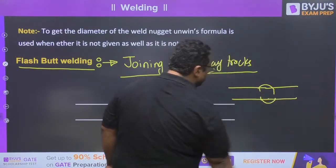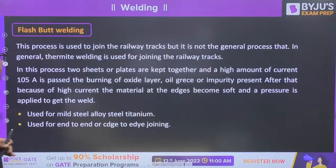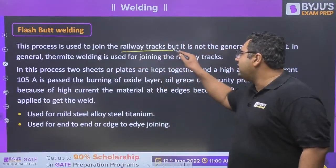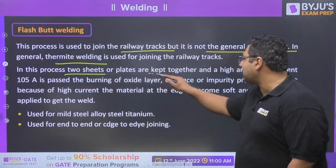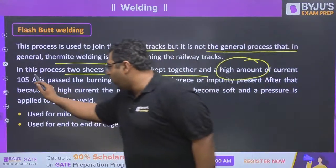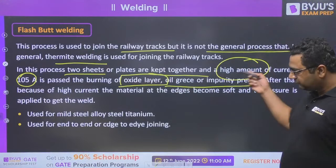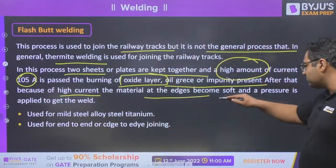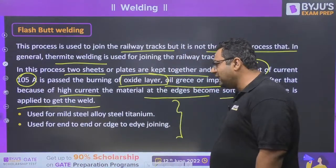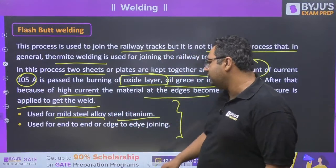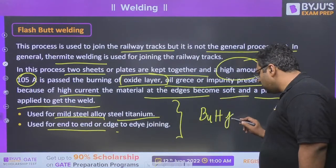As the rail edges become softer, pressure is continuously applied and they get joined, producing a butt weld. Important points for flash butt welding: the process is used to join railway tracks, but the general on-site process is thermit welding. Plates are kept together; 10⁵ amperes current is passed; oxide layer, oil, grease, and impurities get burned out; then the material edges become soft and pressure forms the weld.